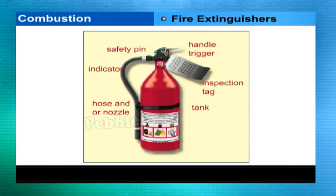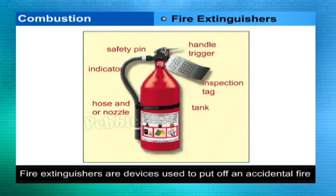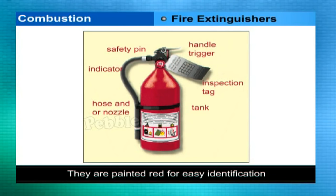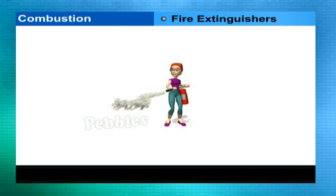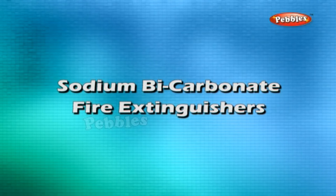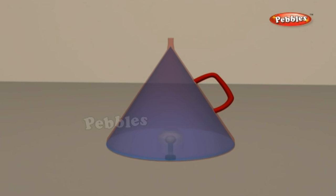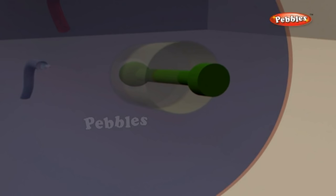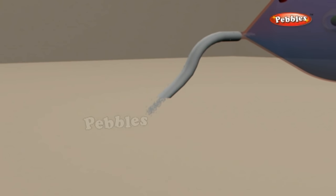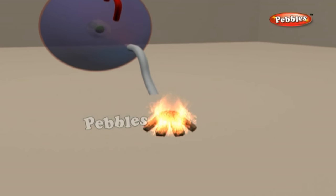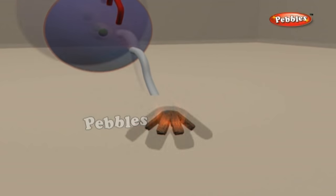Fire extinguishers: you must have seen fire extinguishers kept in schools, theaters, hospitals, business places, etc. Fire extinguishers are devices used to put off an accidental fire — they are painted red for easy identification. The sodium bicarbonate fire extinguisher consists of a large cone-shaped steel vessel containing a strong solution of sodium bicarbonate (NaHCO₃) or solid bicarbonate. The bottom of the vessel is fitted with a metal plunger and a bottle of concentrated sulfuric acid. When needed, bang the knob or plunger — it breaks the bottle containing the acid. The acid reacts with sodium bicarbonate solution, releasing carbon dioxide which comes out through the nozzle and puts out the fire.